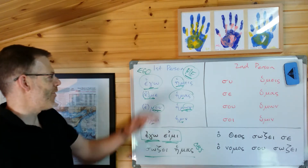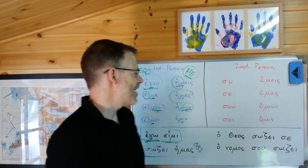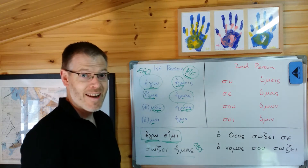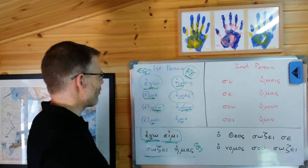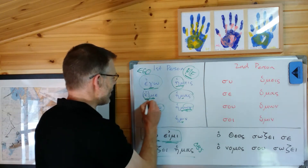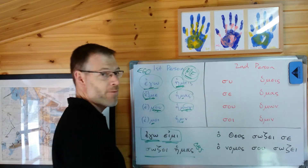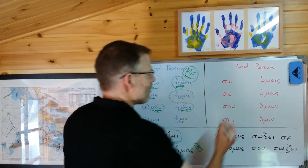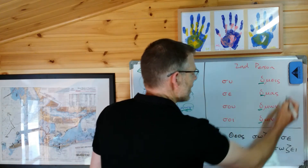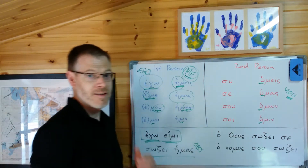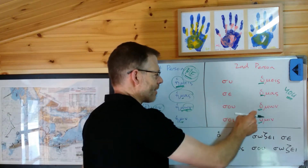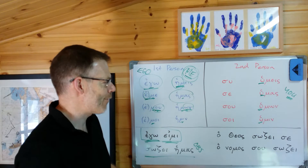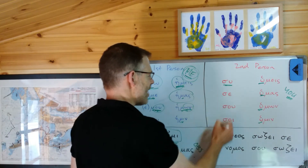The second person pronoun is used in much the same way. But first, just notice the differences in the form. Whereas the first person pronoun can easily be remembered because of the mu and the epsilon, or the mu and the eta, which reminds us of me, the second person pronoun can easily be remembered because of the upsilon, which is a little bit like you. Second person: su, se, su, soi. And the plural: hūmeis, hūmas, hūmōn, hūmin.